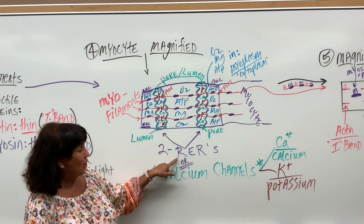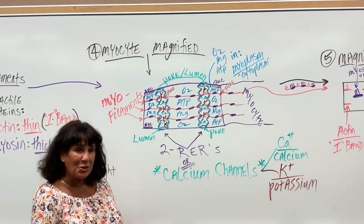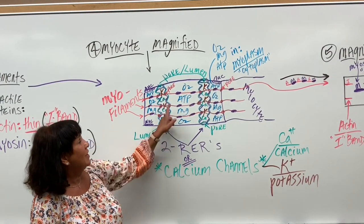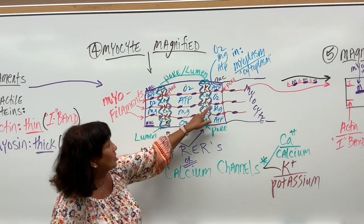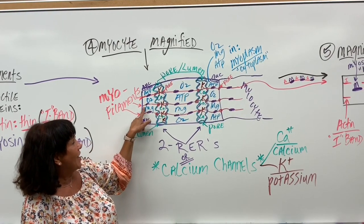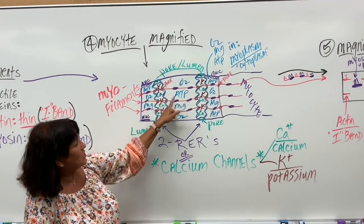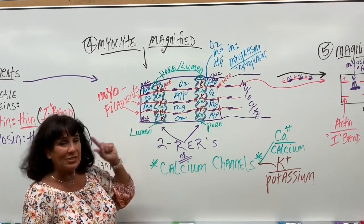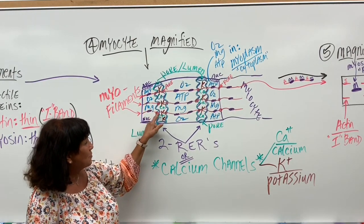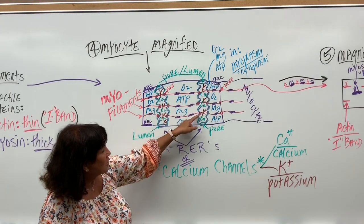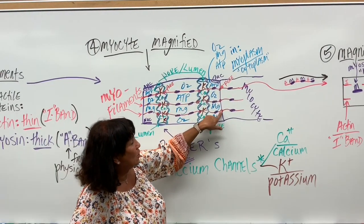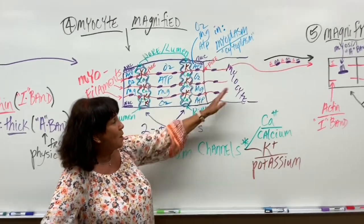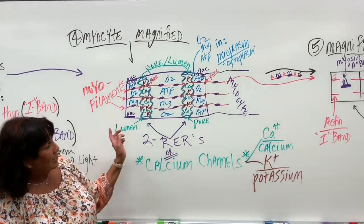They also rename the RERs myoplasmic reticulums, or you can call them sarcoplasmic reticulums, because myo and sarco means muscle. Out here you can see the myofilaments going across with actin and myosin - the red is actin, the purple is the myosin. There are little tiny pores that allow these filaments, like little hairs, to go right through the RER and continue. There's another pore, and then it goes into another cell. So when one muscle cell contracts, they're all going to contract - just like dominoes going down the whole long line of cells.